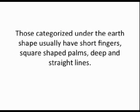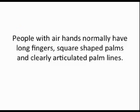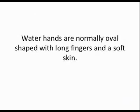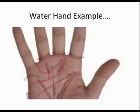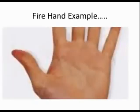Those categorized under the earth shape usually have short fingers, square-shaped palms, and deep, straight lines. People with air hands normally have long fingers, square-shaped palms, and very clearly articulated palm lines. Water hands are normally oval-shaped with long fingers and soft skin. And those with fire hands have shorter fingers, longer palms, and well-defined, clear skin.